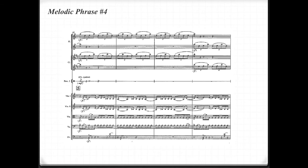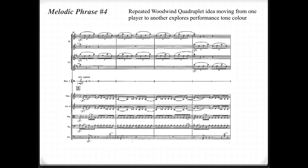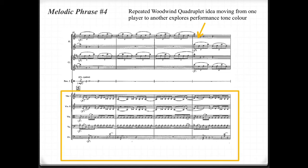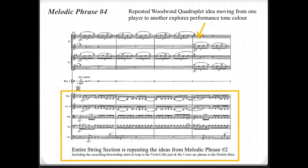Melodic phrase number four. There's a repeated woodwind quadruplet idea moving from one player to another, which explores performance tone colour — moving from one flautist to the next means they will approach and play the phrase differently, with subtle changes enhancing tone colour. This occurs in the clarinet as well. The entire string section is repeating the ideas from melodic phrase number two, including the ascending and descending interval leap in the viola and cello, and the three-note arc phrase in the double bass.